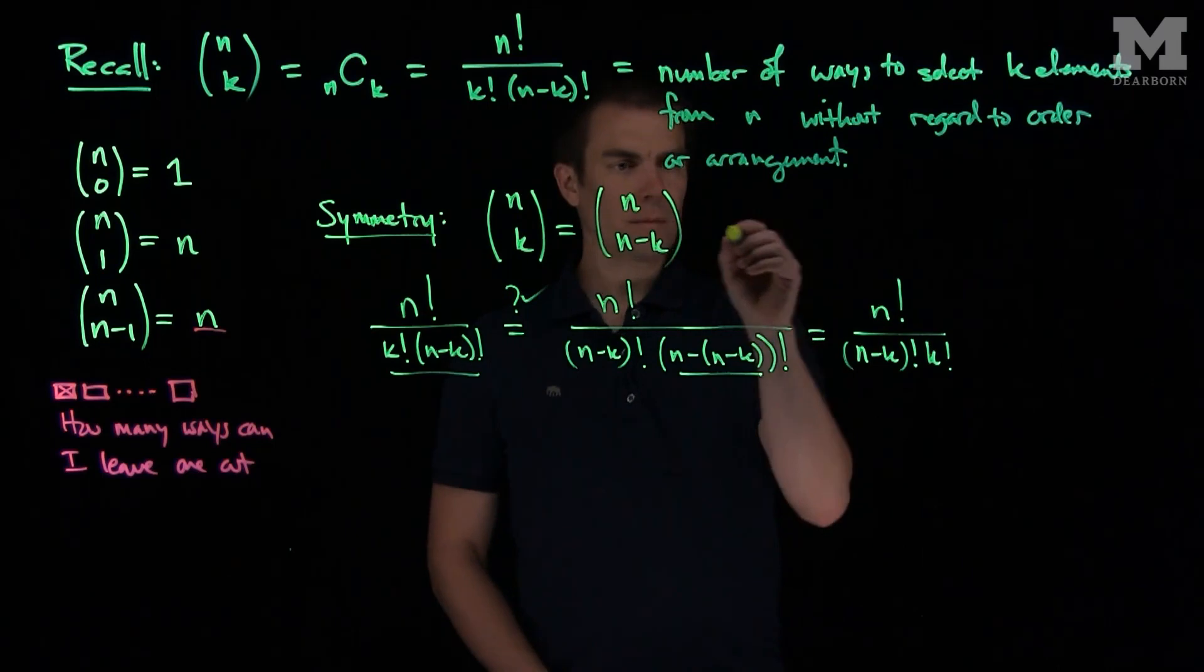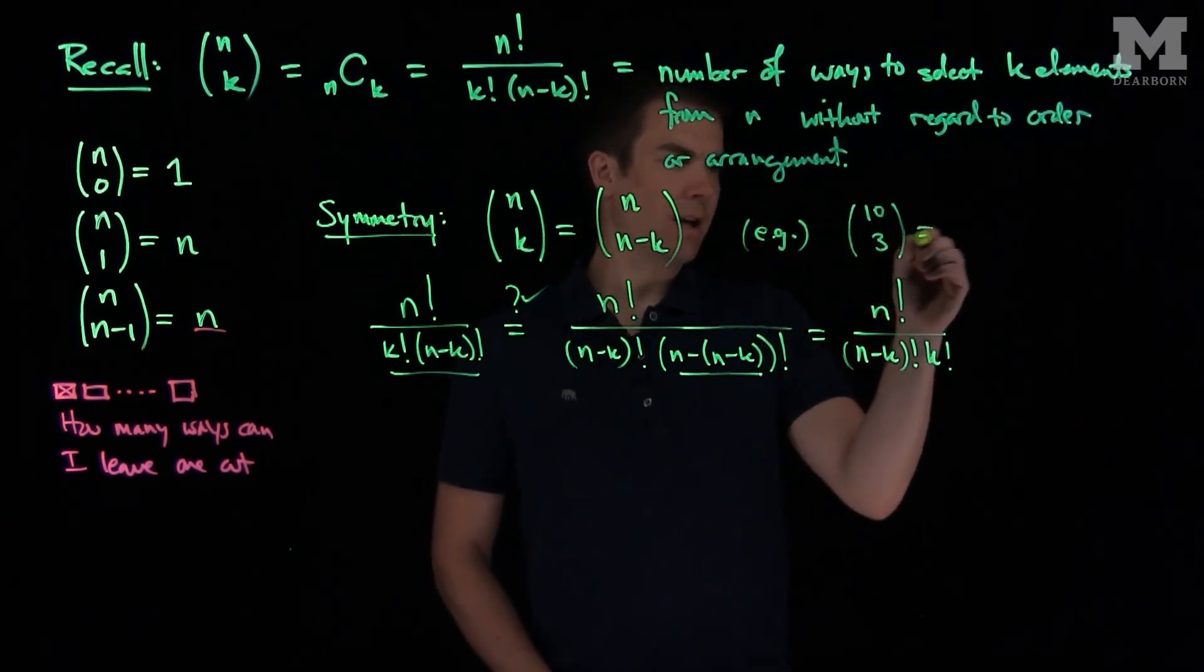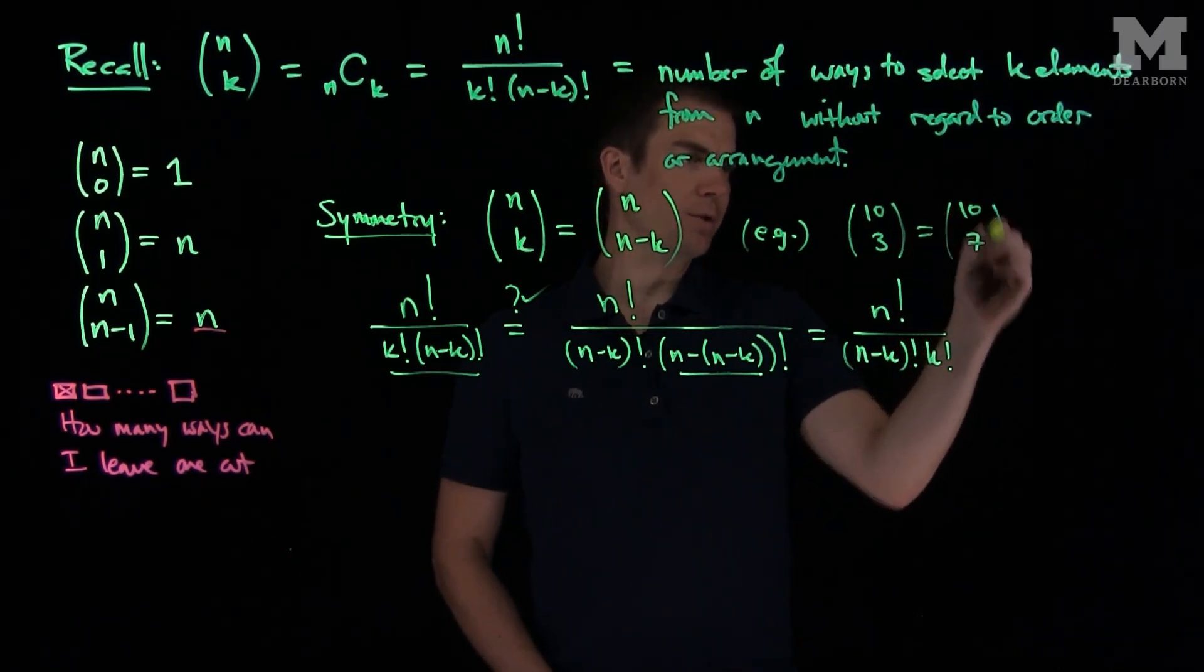So for example, we could have that 10 choose 3 is the same as 10 choose 7. And we can think of this from a leave one out perspective as well.